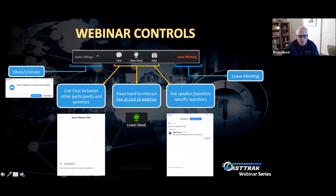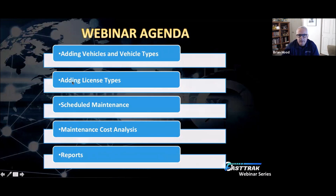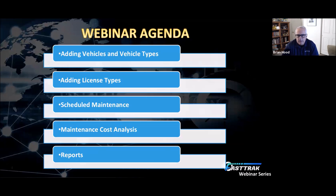Things we're covering today: adding vehicles and vehicle types, basic setup, getting a full understanding of how those work. Adding licenses and license types to vehicles so you can be notified about expirations. We'll also touch on maintenance and maintenance cost analysis, and close with reporting — the reports you can pull out as well as exporting various items for further analysis.